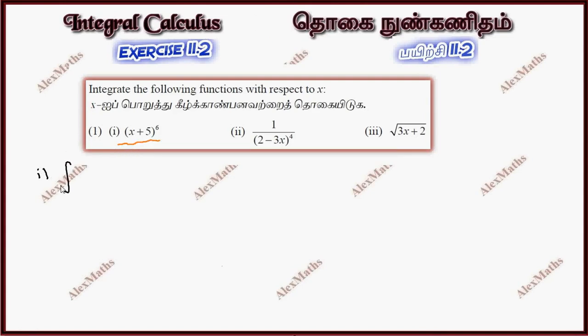Integrate x plus 5 whole power 6 dx. It is a basic integration formula. Suppose integration of x power n. It is x power n plus 1 by n plus 1 plus c where n is not equal to minus 1.